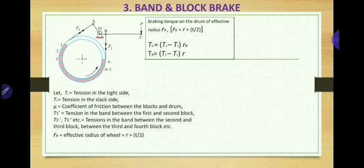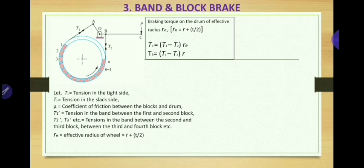Now let us define the nomenclature. T1 is the tension in the tight side, T2 is the tension in the slack side, μ (mu) is the coefficient of friction between the block and drum, generally between 0.1 to 1. T1' (T1 dash) is the tension in the band between the first and second block. Starting from the left end, blocks are numbered 1, 2, 3 up to n. T2', T3' are tensions in the bands between subsequent blocks, and RE is the effective radius R + T/2.